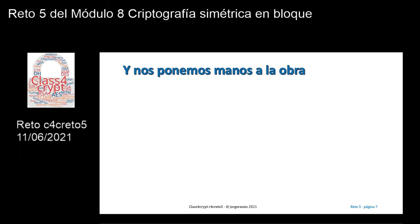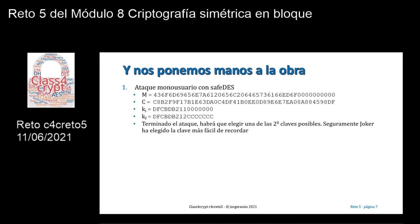Y nos ponemos entonces manos a la obra. Ataque monousuario con el software SaveDesk. Tenemos el mensaje M, el criptograma C, ambos en hexadecimal. Tenemos una clave K sub I y una clave K sub F, también ambas en hexadecimal. Eso nos va a dar un espacio de ataque y, terminado el ataque, habrá que elegir entre las 2 elevado a 8, es decir 256 claves posibles. Hay tantas claves — 2 elevado a 8 — como ya lo hemos visto en una clase anterior, debido a que el algoritmo DES permite que introduzcamos una clave de 64 bits cuando en el fondo solamente usa una clave de 56 bits al quitar los octavos bits de cada byte, suponiendo que son bits de paridad.